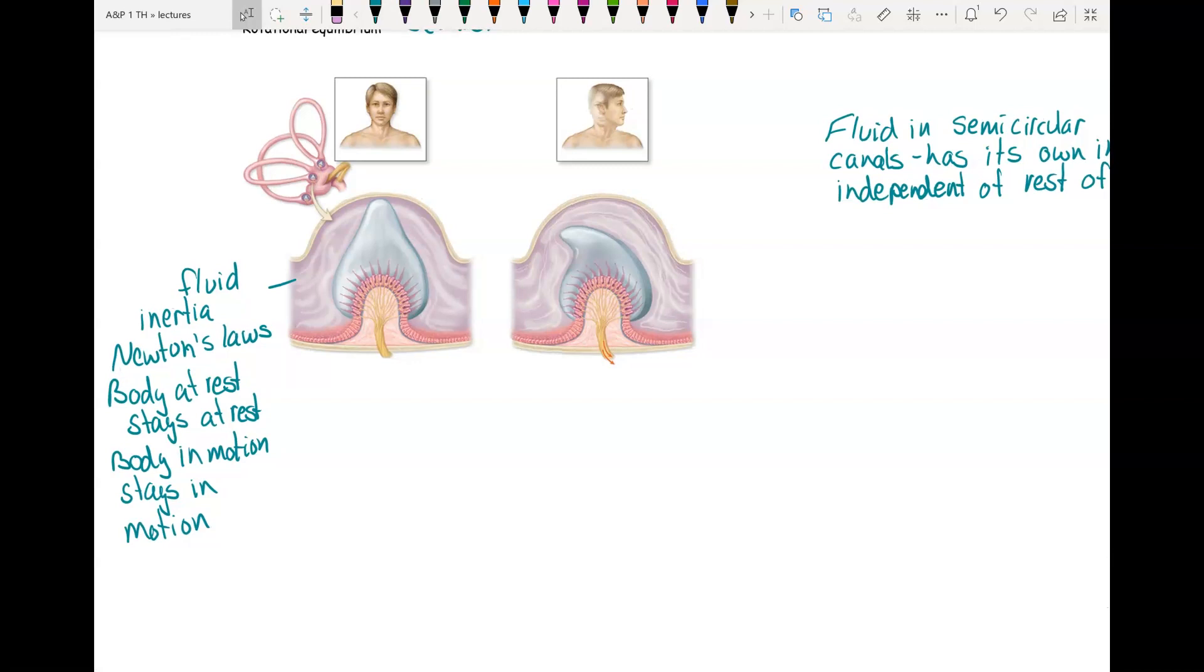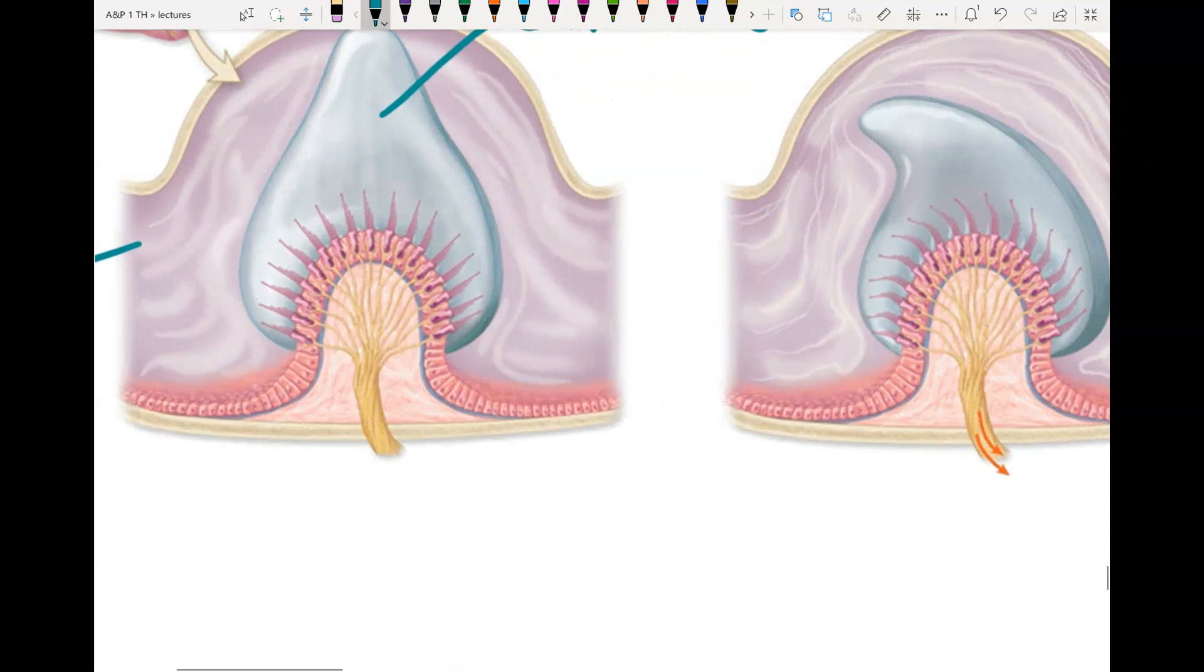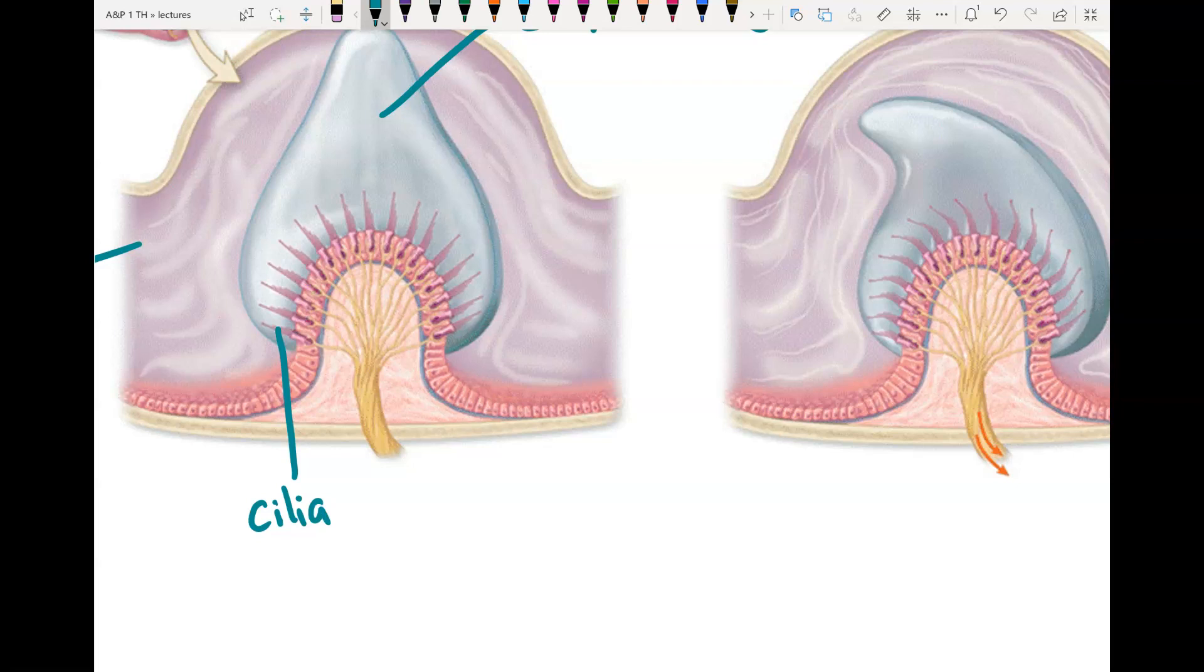Embedded in that fluid you have a cupula. This again is like the otolithic membrane. It's like a jello jiggler, a gel membrane. Then you have your cilia, and attached to that is your cranial nerve number eight, vestibulocochlear nerve.